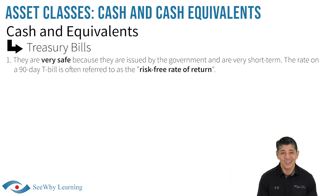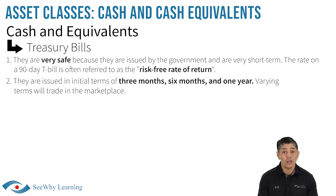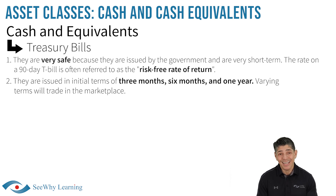Let's face it, it's unlikely the Canadian government — which has the power of taxation — will default on a T-bill in the next 90 days. They are issued in initial terms of three months, six months, and one year. Varying terms will trade in the marketplace, though. For example, in 80 days, a treasury bill initially issued with a 90-day term would be a 10-day T-bill.